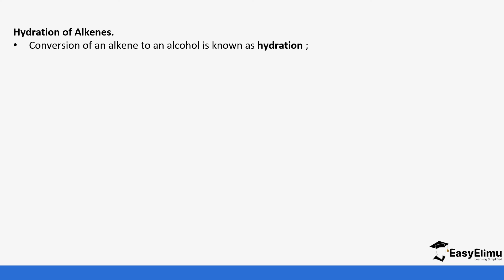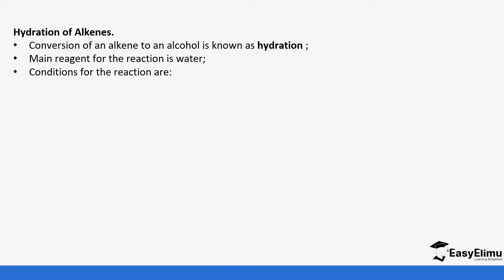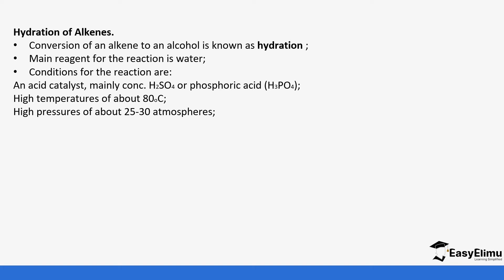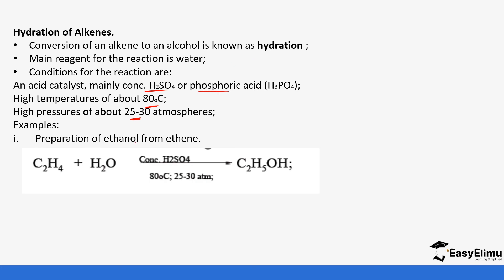Another method is the hydration of alkenes. The conversion of an alkene to an alcohol is referred to as hydration — note the difference between hydrolysis and hydration. The main reagent for this reaction is water, and the conditions include an acid catalyst, which can be either concentrated sulfuric acid or phosphoric acid, temperatures around 80 degrees Celsius, and pressures of about 25 to 30 atmospheres.